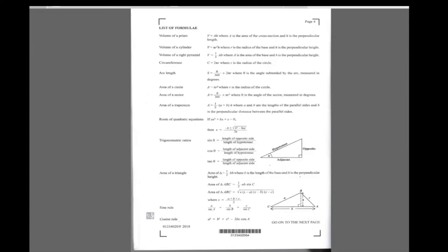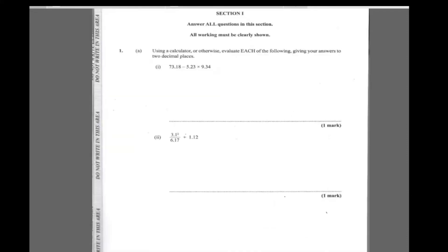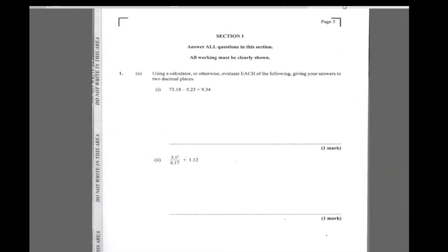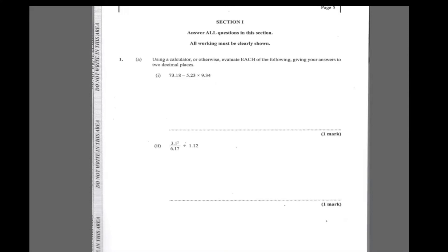Again, you have the formula sheet, so anytime you don't remember a formula, always try the formula sheet. It says using a calculator or otherwise, evaluate each of the following, giving your answer to two decimal places. The key statement right here is it said two decimal places. So let's put all of this in a calculator and round off your answer to two decimal places. So 73.18 minus 5.23 times 9.34, just put everything in the calculator and you get 24.3318. So the answer is 23.3318.